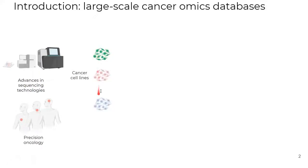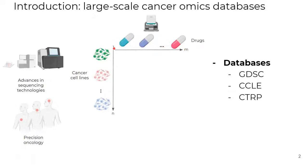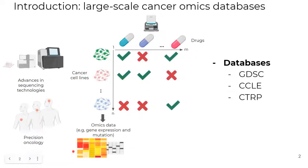This, allied to the availability of a large number of cancer cell lines, has provided ready models for collecting drug response data. We can name some large-scale omics databases such as GDSC, CCLE, and CTRP. These consortia are screening M drugs and N cell lines, providing metrics like IC50 or area under the curve, in addition to the omics profiles such as gene expression and mutations.